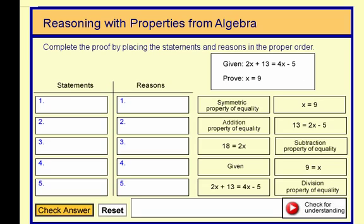Complete the proof by placing the statements and reasons in the proper order. I'm going to work through the process of completing a two-column proof. Given 2x plus 13 equals 4x minus 5, and we're going to prove that x equals 9.